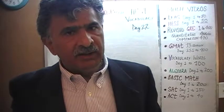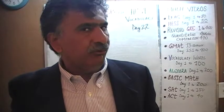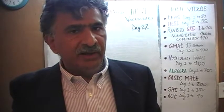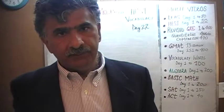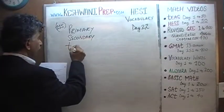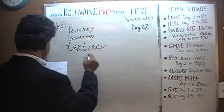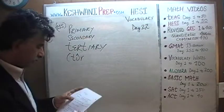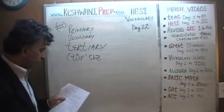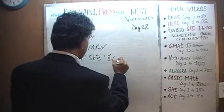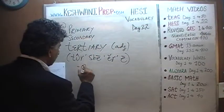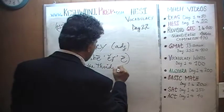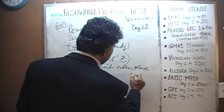My question is: what comes next? If you describe something as primary, that is of the first order — the very basic, the very fundamental, the very elementary. The one above that is described as secondary, which means of the second level, the second order. What comes after primary and secondary? That is what we want to learn. Let's learn it together: ter — she — er — re. Tertiary. Tertiary, which means of the third order, or of the third place, or of the third rank.